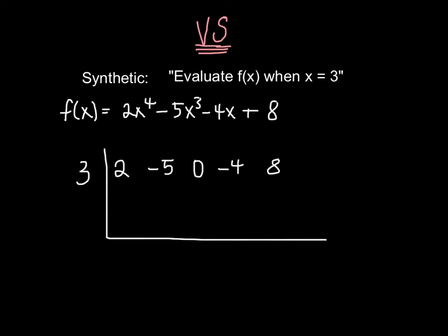So first we're going to bring down the 2. And then we can easily look from this value to this value. Multiply them together. So we write the product here under the next value. Add those together. So negative 5 plus 6, which is 1. Once again we're going to multiply by 3, which is 3. Once again we're adding, and then multiplying, and adding, and multiplying, and adding. So f of 3, because we've been told to evaluate this function when x is 3, f of 3 is 23.